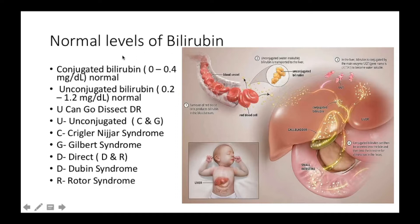So when we take conjugated bilirubin, the normal levels are between 0 to 0.4 milligrams per deciliter. That's the normal level for conjugated bilirubin. And the normal levels for unconjugated bilirubin is 0.2 to 1.2 milligrams per deciliter.